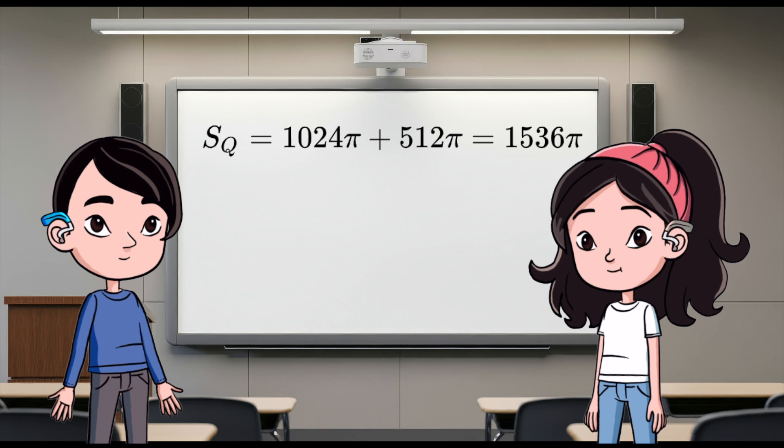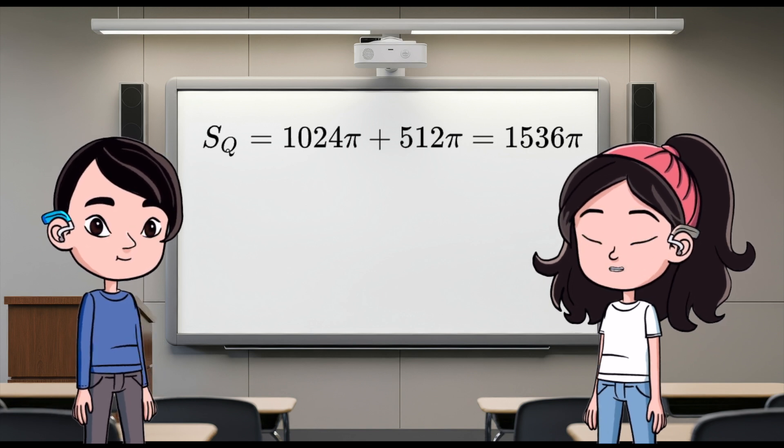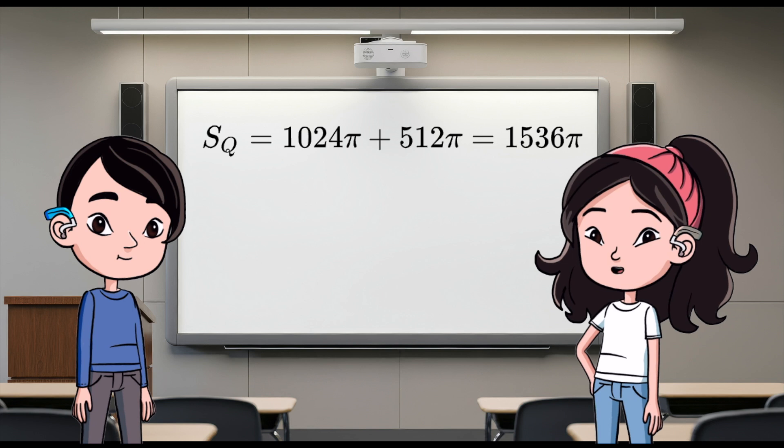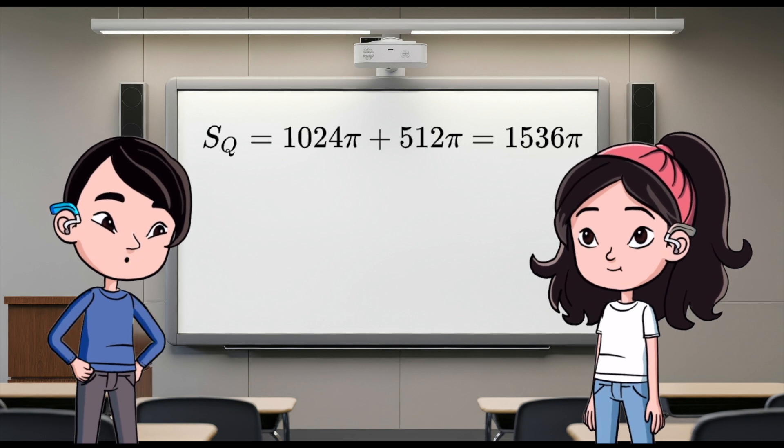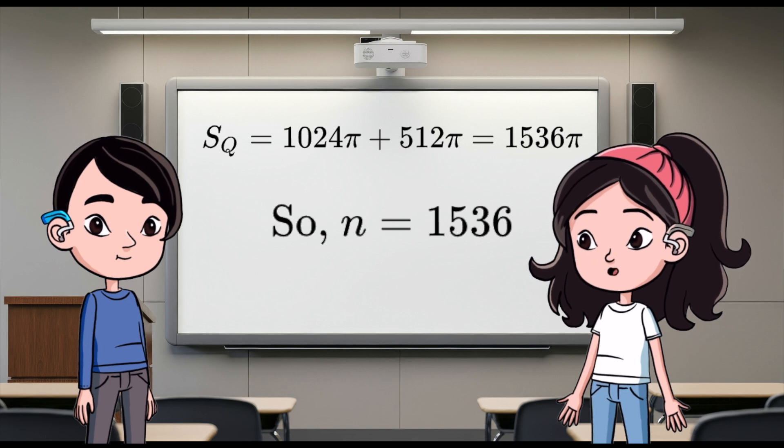Simplify that. 2π times 512 plus 2π times 256. Which is 1024π plus 512π. Totaling 1536π. So, n equals 1536.